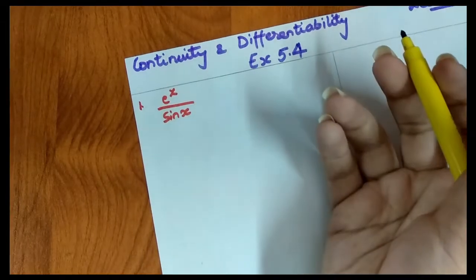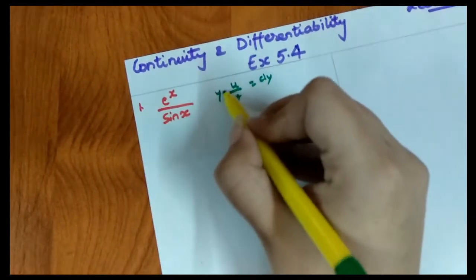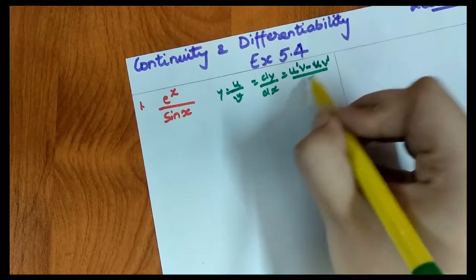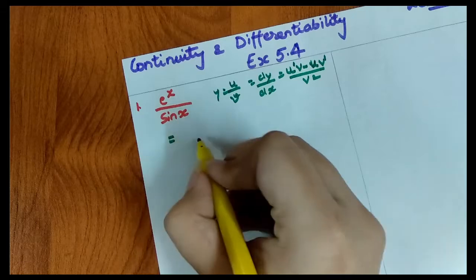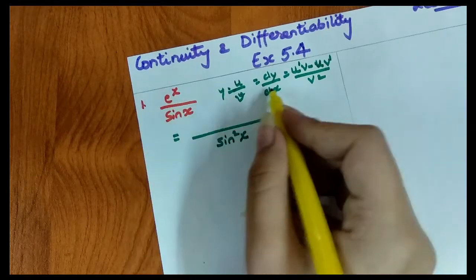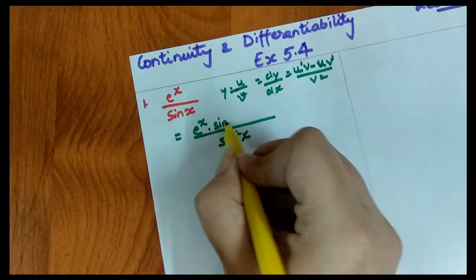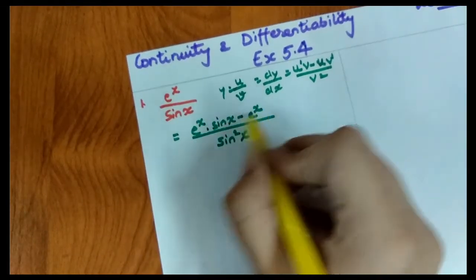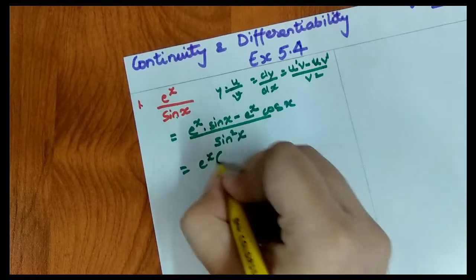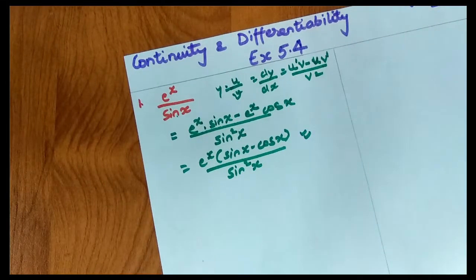We need to apply the quotient rule here. When we are given a function in the form numerator by denominator, we use the quotient rule. If y = u/v, then dy/dx = (v·du/dx − u·dv/dx) / v². Applying this, we get (sin x · e^x − e^x · cos x) / sin²x.